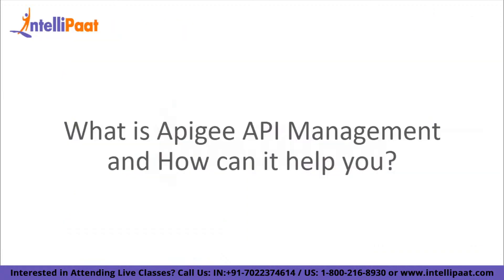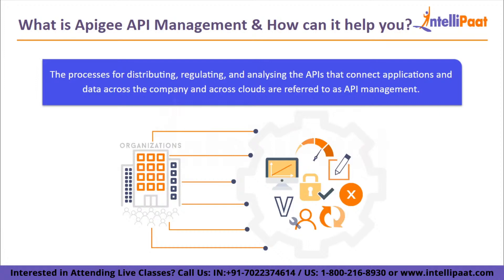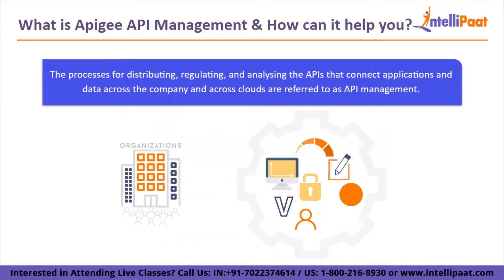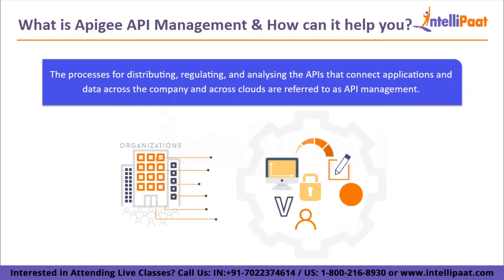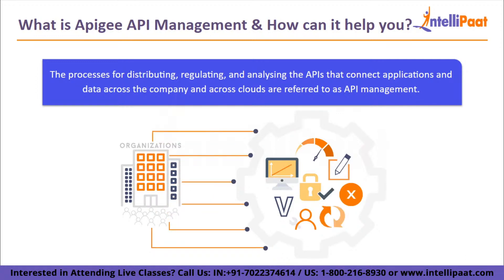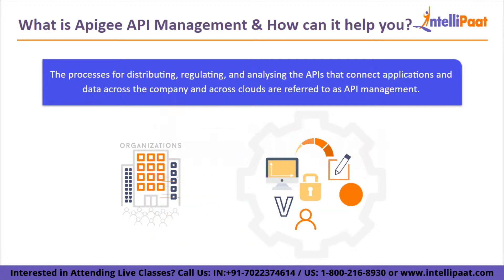Let's check out our last agenda: what is Apigee API management and how can it help you? The processes of distributing, regulating and analyzing the APIs that connect applications and data across the company and across clouds are referred to as API management. API management enables companies that design APIs or use others' APIs to keep an eye on the activity in order to verify that the requirements of the developers and apps using the APIs are satisfied. Organizations are putting systems in place to manage their APIs in order to adapt quickly to changes in client needs. These businesses often use a microservices architecture to accelerate software development and satisfy synchronous communication amongst microservice architectures.